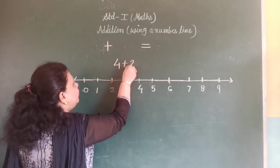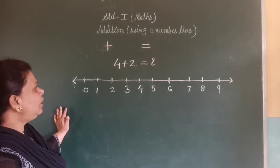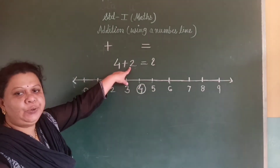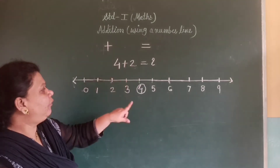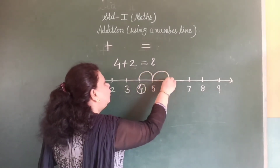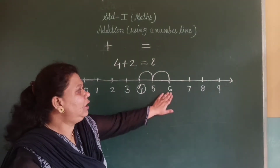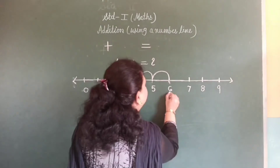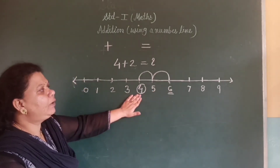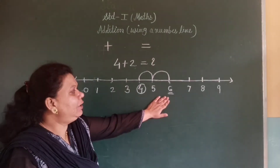4 plus 2 is equal to how many? Look at the number line. First, locate number 4 on the number line. This is number 4. To add 2, take 2 forward jumps from 4. 1, 2. 2 forward jumps from 4. The number you land on is the answer. Here, after taking 2 forward jumps from 4, we land on number 6.